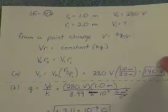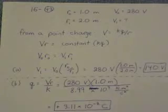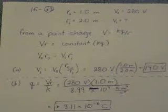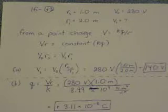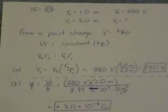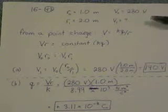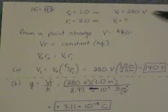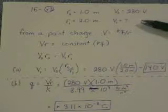Next is number 43. At 1 m from a point charge, electric potential is 280 volts. What's the potential 2 m from the same charge? Okay, so here's the given information. r0 equals 1 meter, v0 is 280 volts, r1 is 2 meters, what is v1?